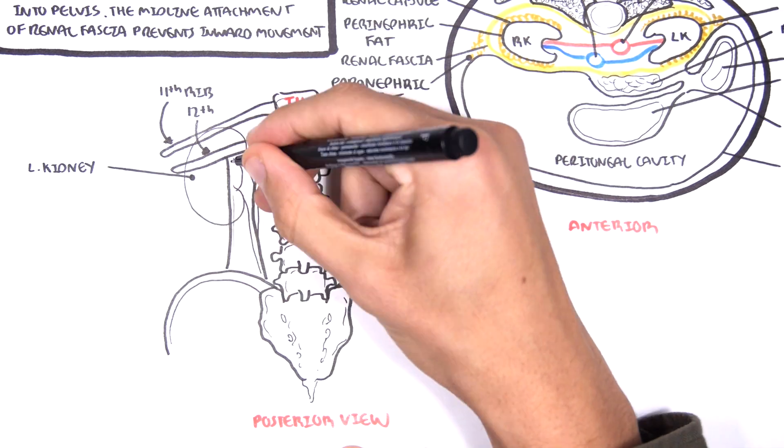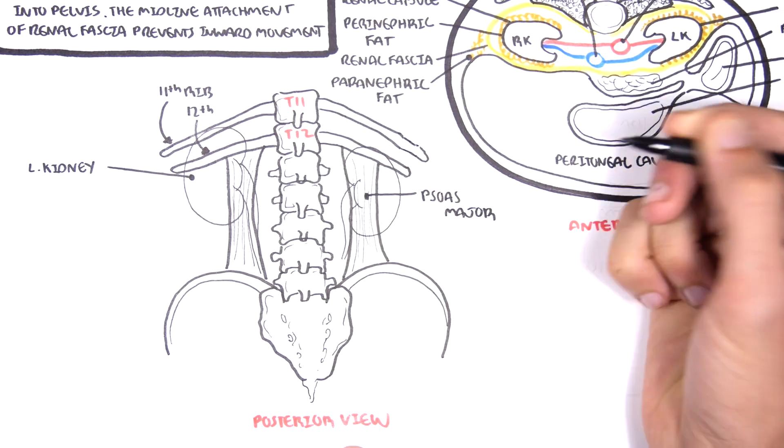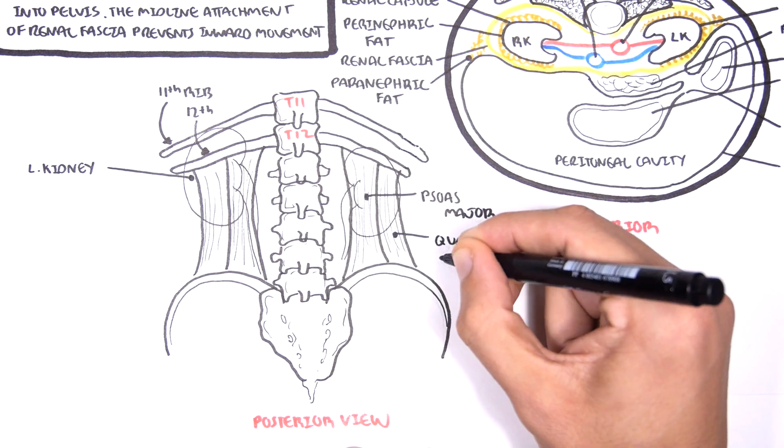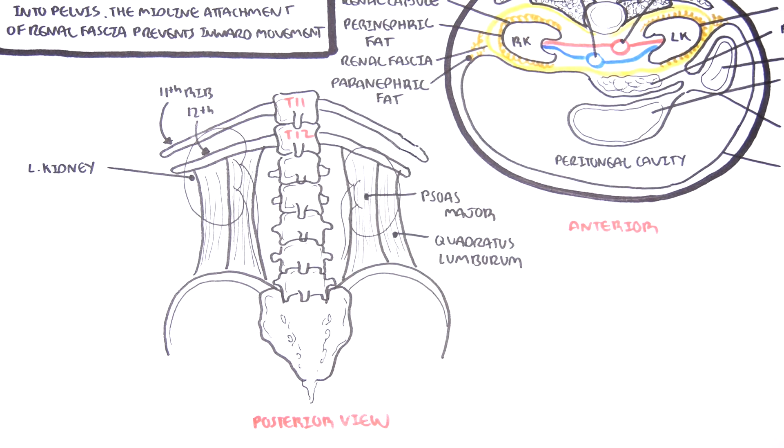The muscles we spoke about earlier, the psoas major and the quadratus lumborum are situated here. The psoas major is probably not well represented here but it actually originates at the vertebral T12 body and extends anteriorly and joins with the iliacus muscle forming the iliopsoas. The quadratus lumborum has fibres from rib number 12 and the transverse process of the vertebrae.